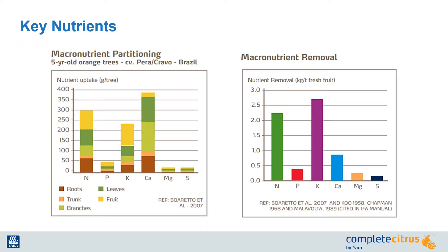I want to clarify that all nutrients are essential to citrus production. When I use the term key nutrients, I am referring to the ones that are in the highest demand for uptake to complete physiological processes. The key nutrients for citrus include nitrogen, potassium, and calcium.